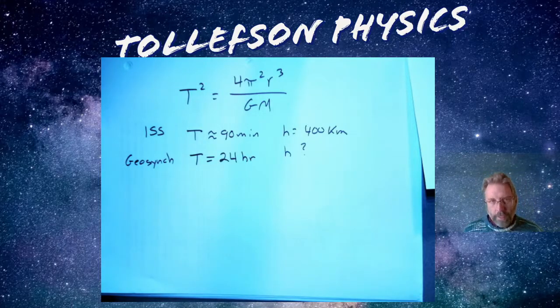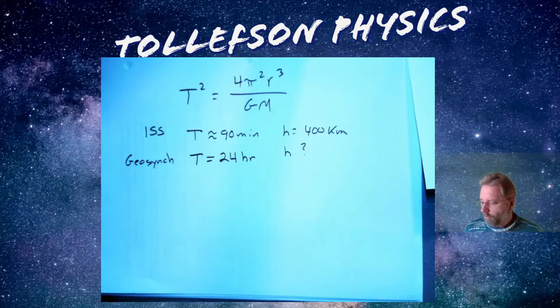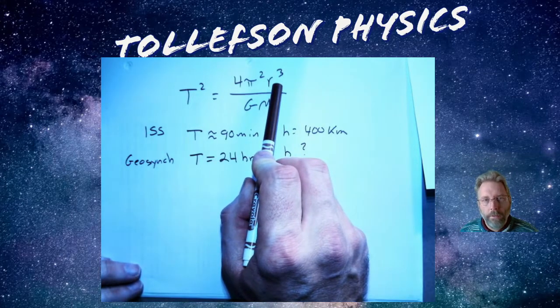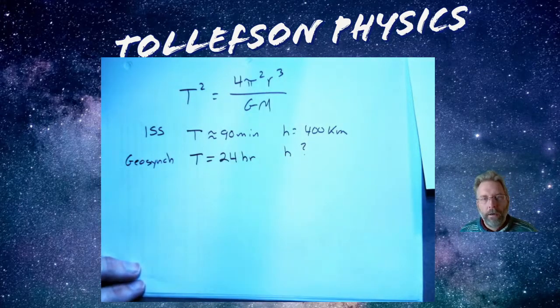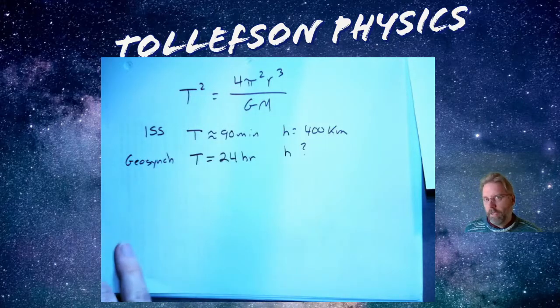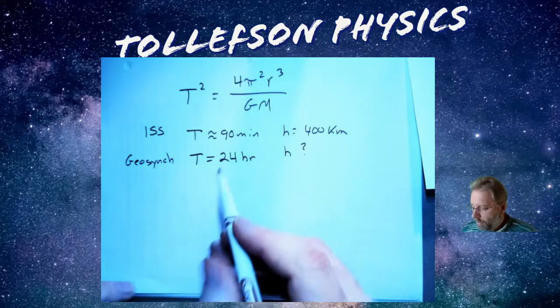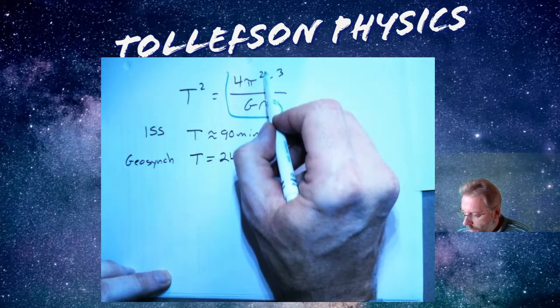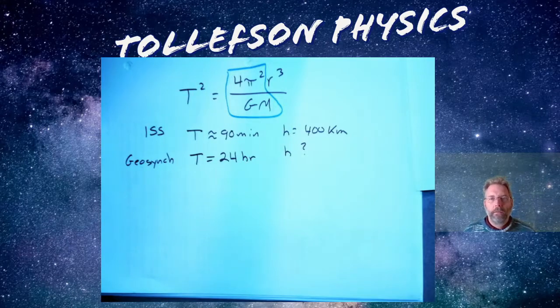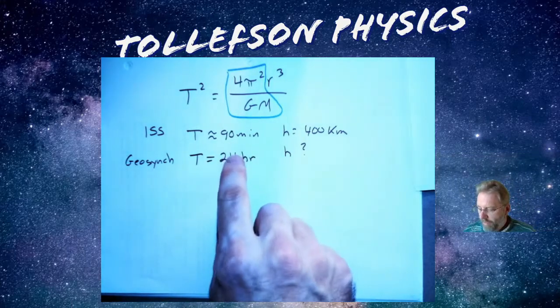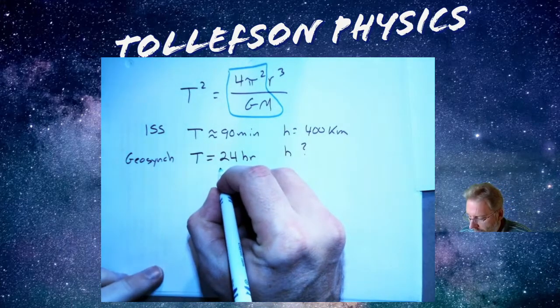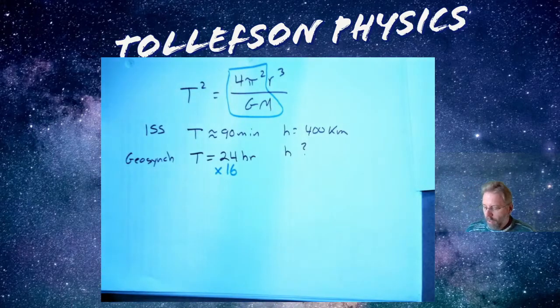How does that affect the height? What I'm going to do is I'm going to try to do some reasoning. I know T is related to r cubed. One way to look at this is I can look at this relationship by itself. And what I soon realize is all of that is a constant. So all of that is a constant. And if I think about this a little bit harder, 24 hours, this is one and a half hours. So this is actually 16 times bigger than the ISS.